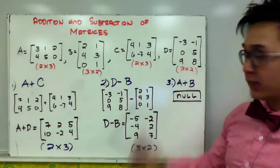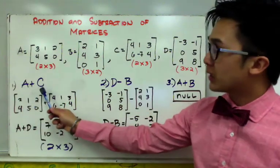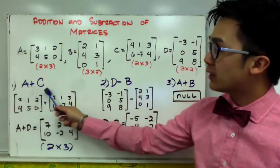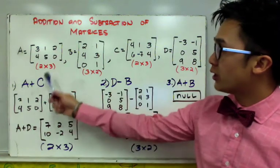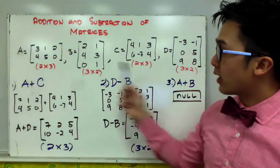So if we're going to evaluate A plus C, which means matrix A plus matrix C, it's going to be possible because the order of matrix A and matrix C are the same. So since they are the same,